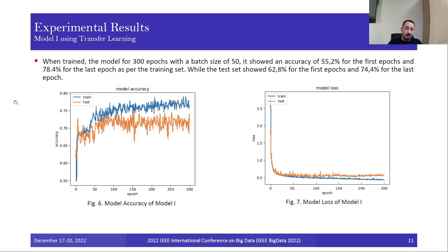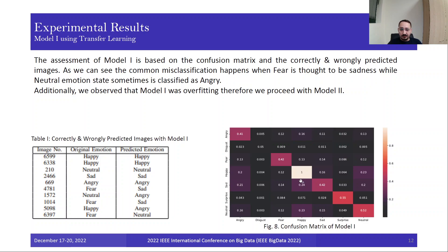Moving on to experimental results. For the first model, when trained for 300 epochs with batch size of 50, it showed an accuracy of 55% for the first epoch and 78% for the last epoch for the training dataset, while the testing set showed an accuracy of 62% for the first epoch and 74.4% for the last epoch, as shown here. Here we have the model loss for the train and test dataset.